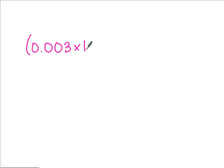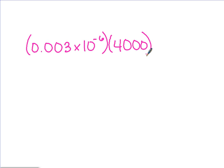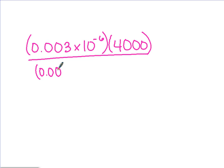I'm going to write an example problem on the board and we're going to work through it. I'm going to let you know a few things that will hopefully make this a little bit easier for you. The example is .003 times 10 to the negative 6, times 4,000, over .006 times 10 to 15, times 2,000.